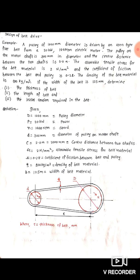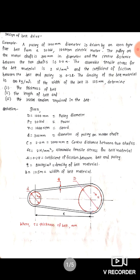Mu is the coefficient of friction between belt and pulley, equal to 0.28. Rho is the density of belt material, that is 900 kilogram per meter cube. The width of belt material is 125 mm. In the diagram, the small size pulley and big size pulley are shown, with center-to-center distance C, and t indicating the thickness of the belt.